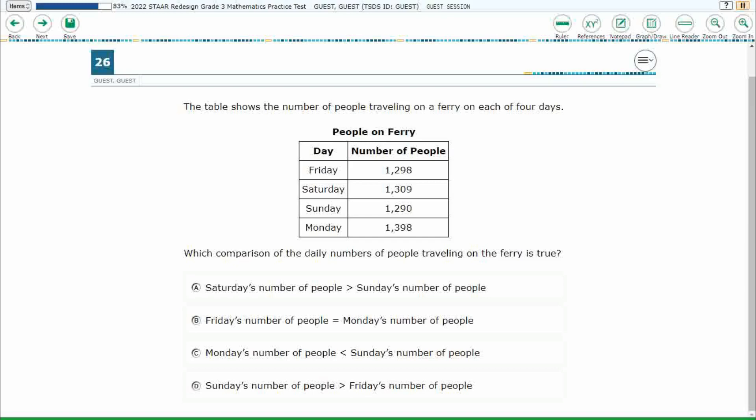So we have a table here showing a number of people traveling on a ferry each day and we need to find one of these comparisons that is true.